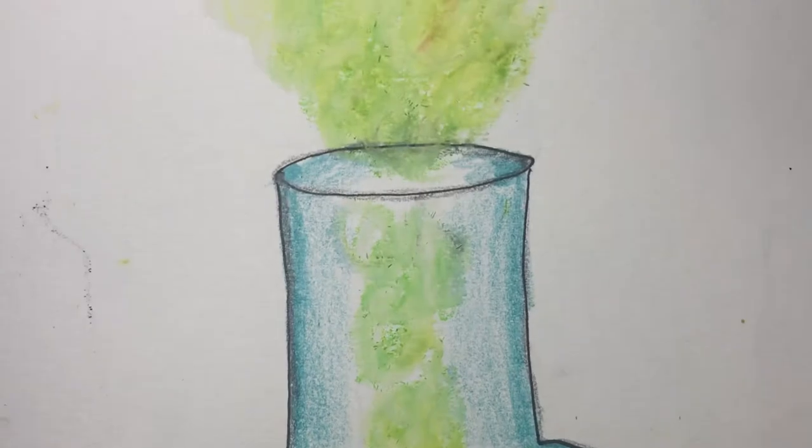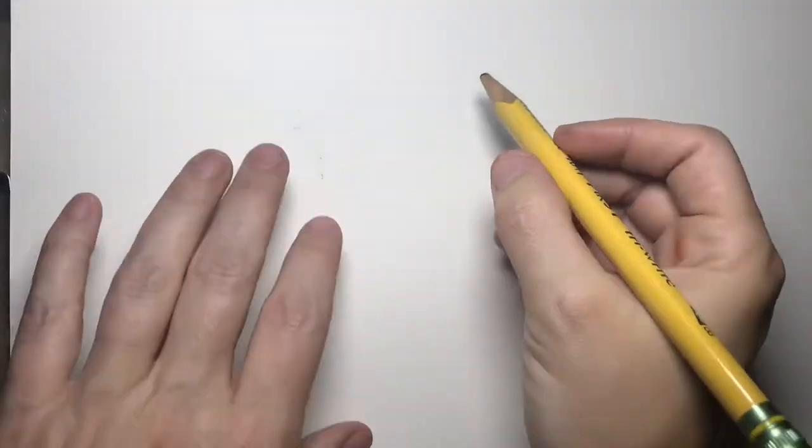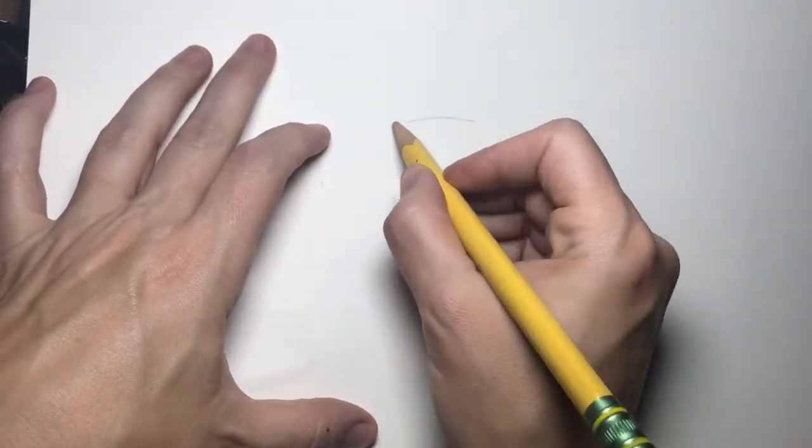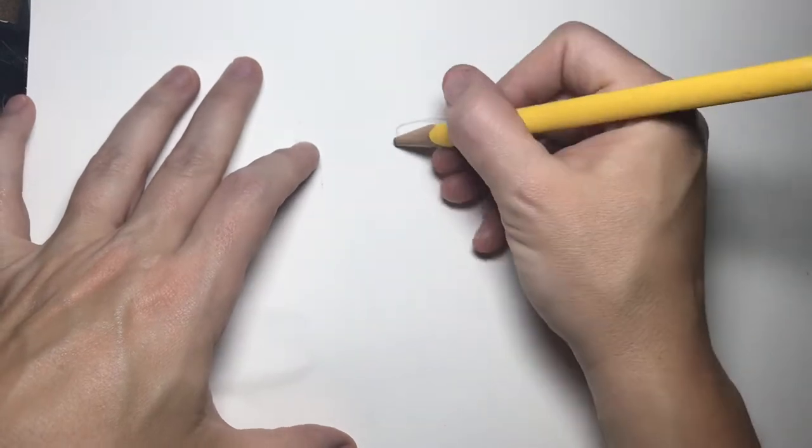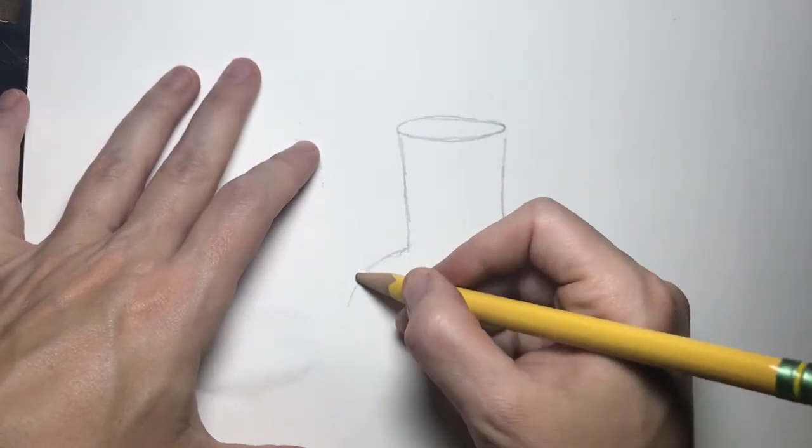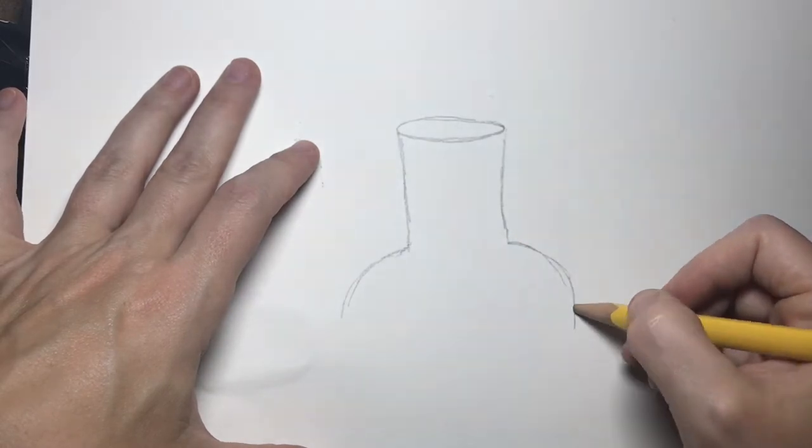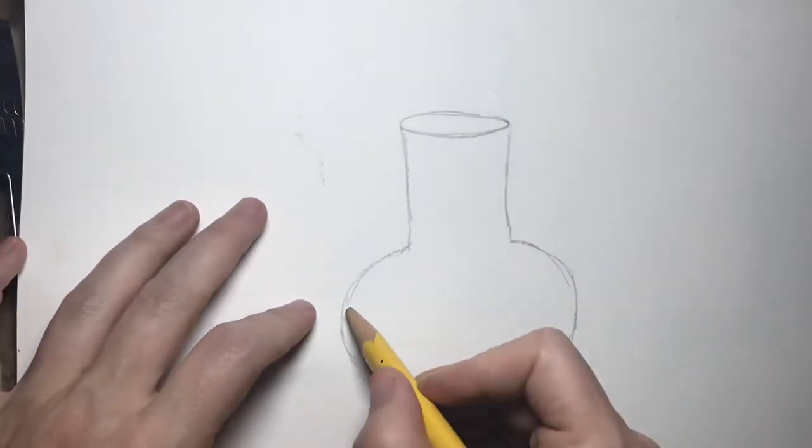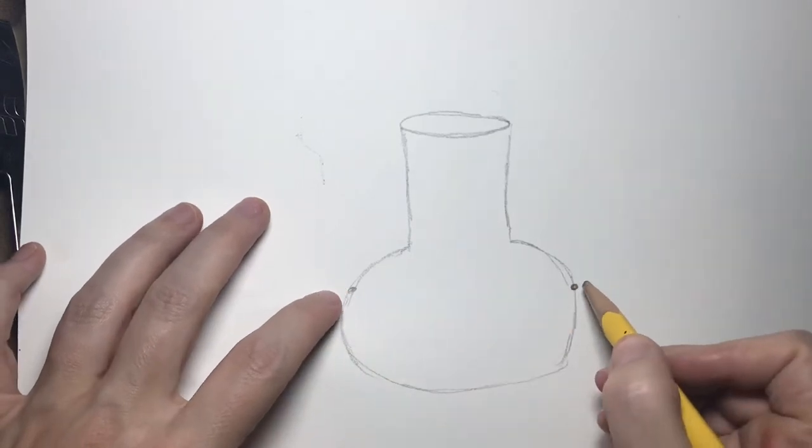So let's draw a simple potion bottle. Remember you can pause the video if it's going too fast. I'm starting with a foreshortened circle. Looks like an oval. Now I can design my bottle. Whatever I do to the left side I do to the right side as well because glasses are usually formed in a symmetrical way.